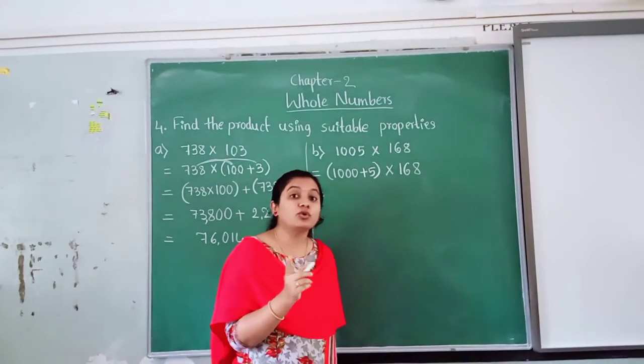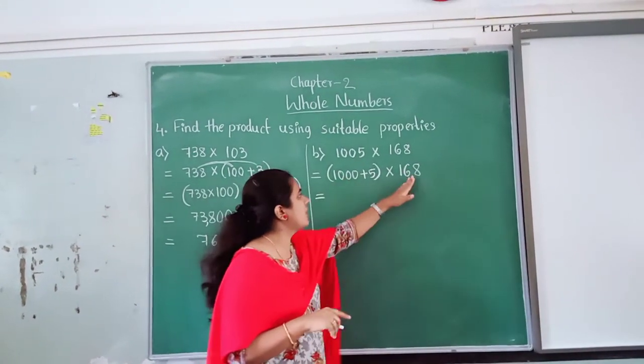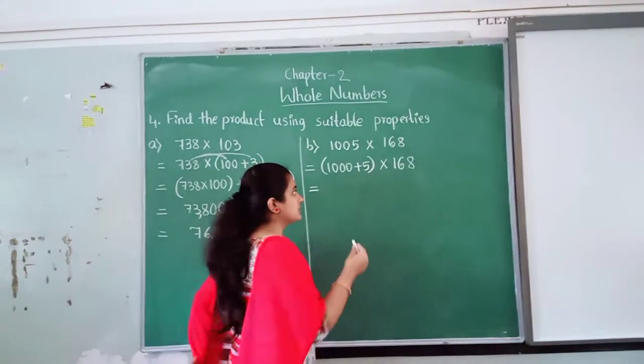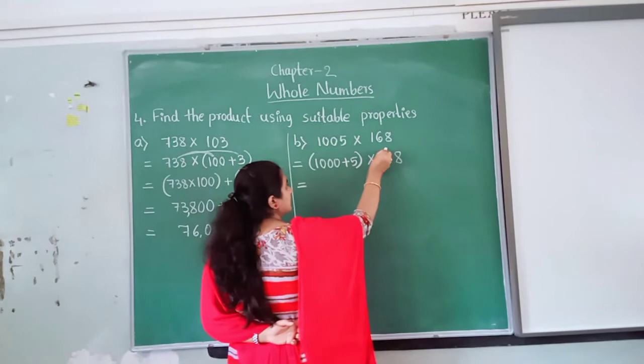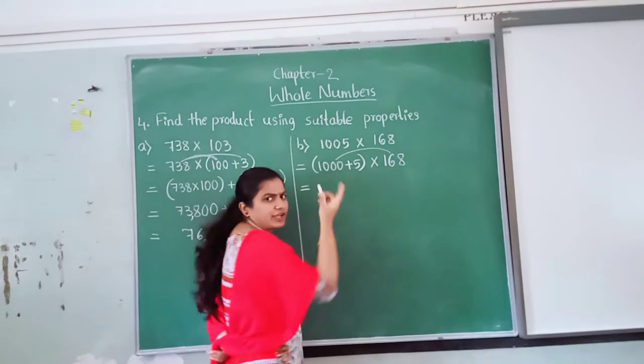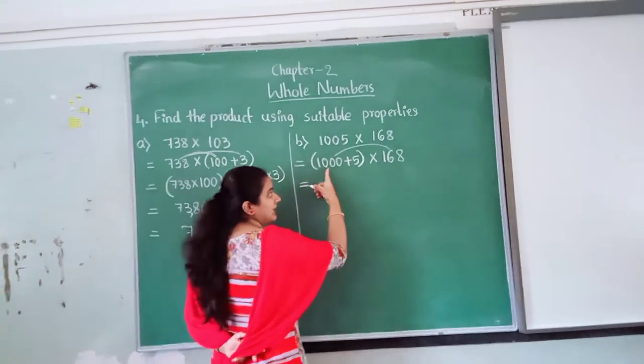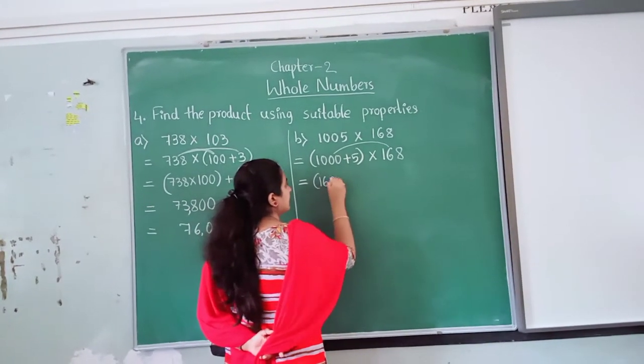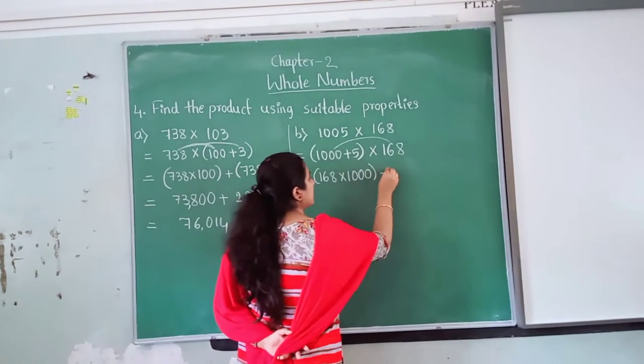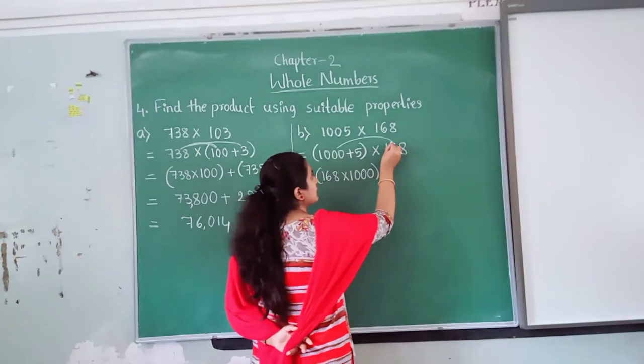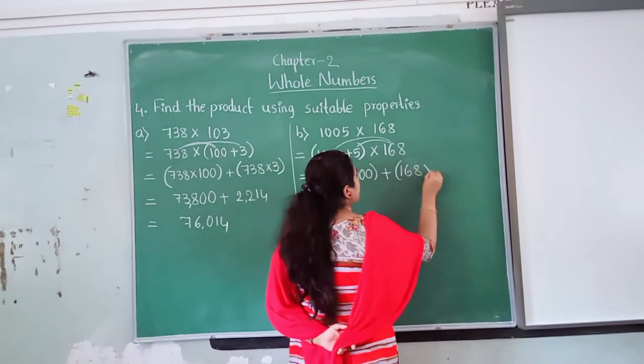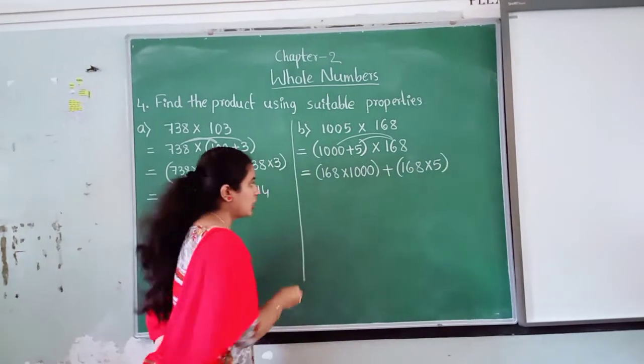First, she will go to whose house? Maybe she will go to this house or this house. Any house you can write first. First, she will go to, I will write this house also. First, she will go to this house. You can write 168 into 5 also. No problem. But, I will write this first. 168 into 1,000 plus, now, she will go to this house. Again, 168 into 5.